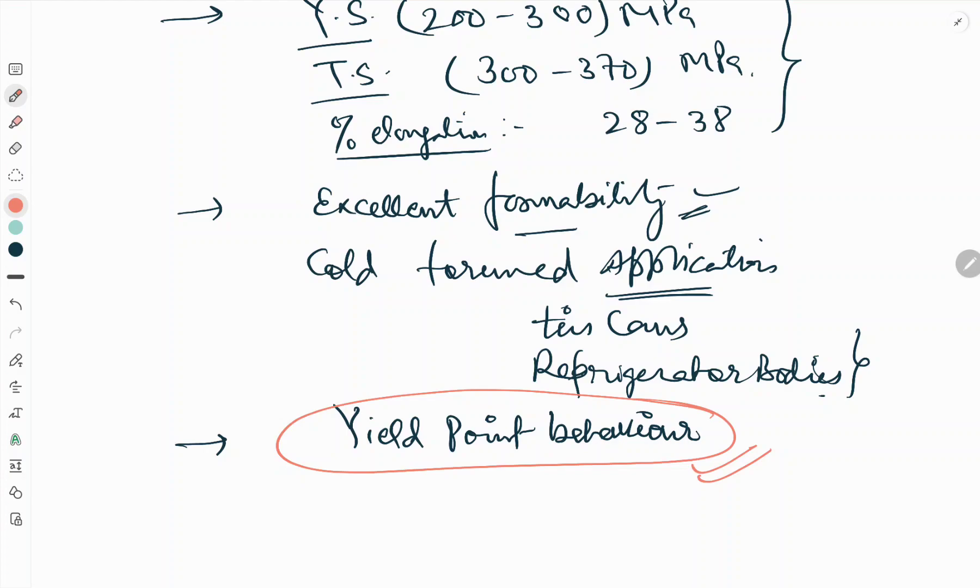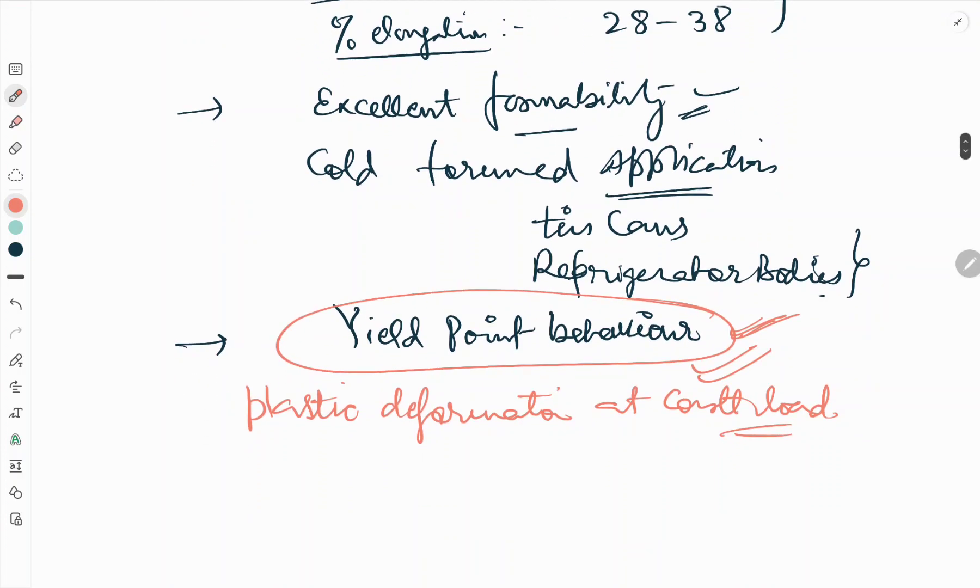The yield point behavior happens in low carbon steel followed by plastic deformation at constant load. I will make a separate video for clearing the concept of this yield point behavior. This plastic deformation is inhomogeneous and occurs by passage of Luder band formation.